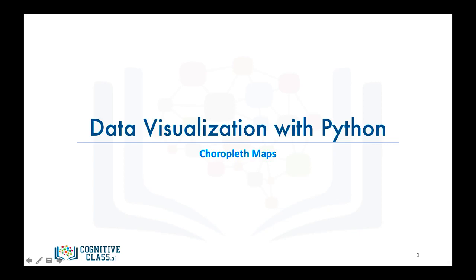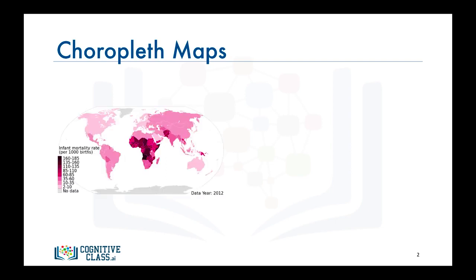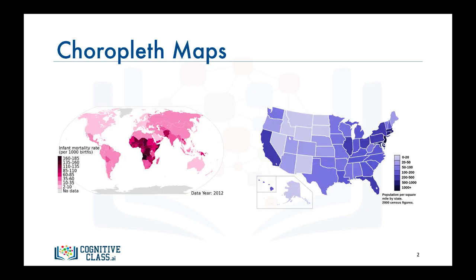In this video we will learn how to create a special type of map called a choropleth map with Folium. I'm sure that most of you have seen maps similar to this one and this one. These are what we call choropleth maps.